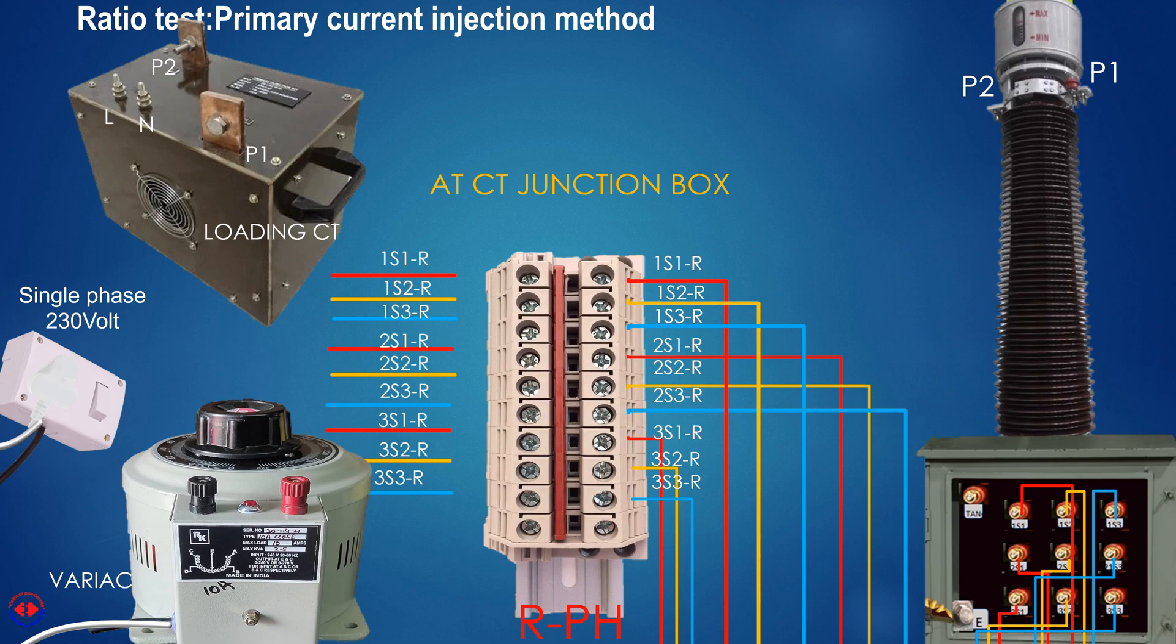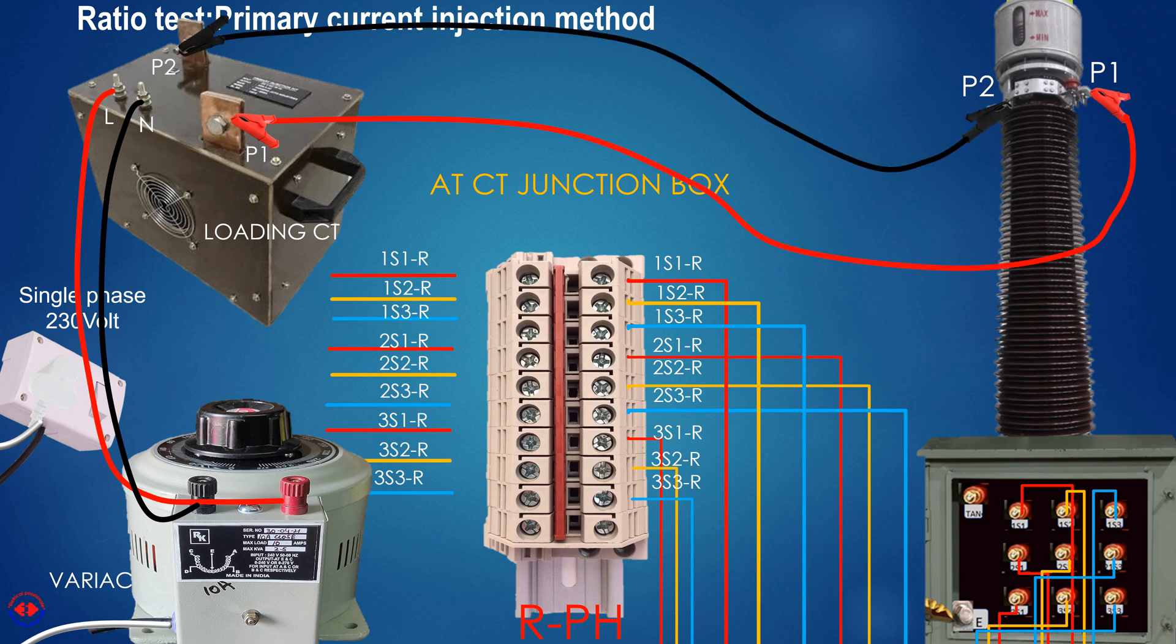Variac output will go into the input of step up current transformer or loading transformer. Then, step up CT output will go into the primary P1 of our main CT on which we are conducting the ratio test. The current that is coming out of P2 is injected by step up CT to make a current path. Current will enter from P1 and leave from P2 terminals.